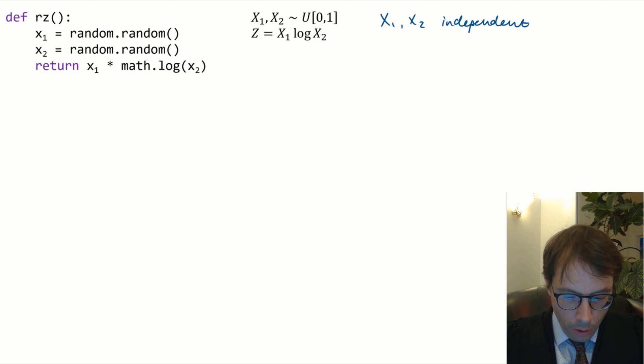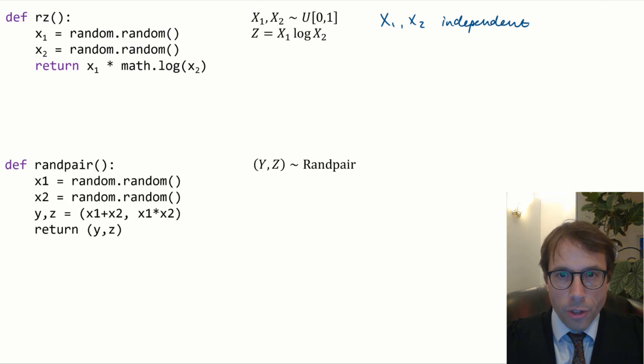In this code, the two values y and z are most definitely not independent. And in maths notation, you'd write it like this. Y, z, twiddles, rand pair or whatever we want to call the distribution. This is a random pair.